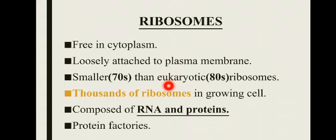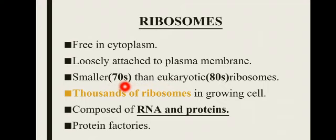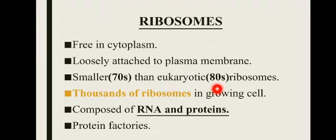Ribosomes کا size bacterial cell یعنی prokaryotic cell اور eukaryotic cell کے اندر different ہوتا ہے۔ چونکہ ہم prokaryotic cell کو discuss کر رہے ہیں، bacteria کے اندر ribosomes چھوٹے ہوتے ہیں as compared to eukaryotic cell۔ Prokaryotic cell میں ribosomes 70S کا ہوتا ہے اور eukaryotic cells میں 80S کا ہوتا ہے، یہ آپ chapter 4 میں detail سے study کر چکے ہیں۔